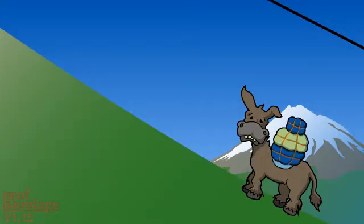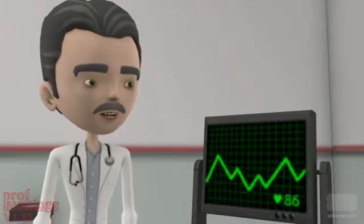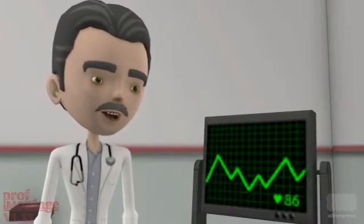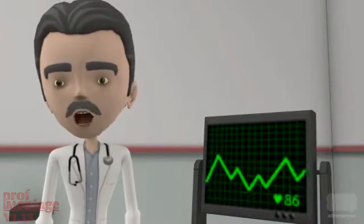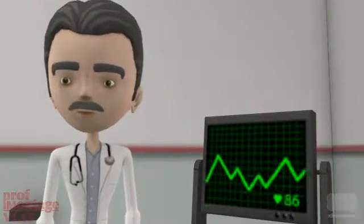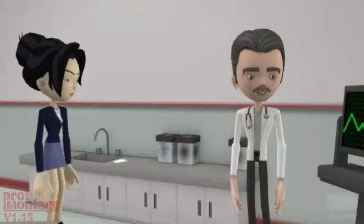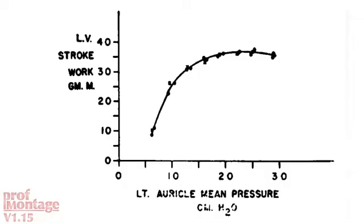Tell us how the left ventricle performs in systole. The story about the donkey with the load getting up the hill. First, there's preload. The ventricular myocardium is like a trampoline — you stretch it and it bounces back, following Starling's law of the heart. Is that the length-tension relationship? Yes. There is a necessary filling tension to generate maximal systolic force. That's preload.